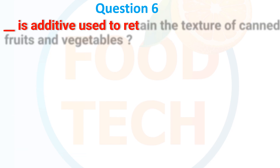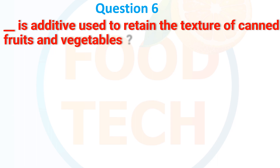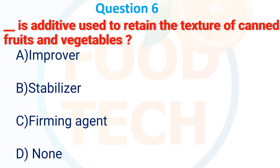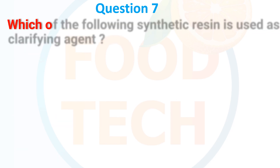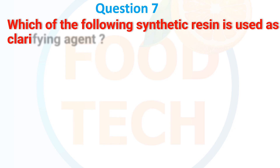A firming additive is used to maintain the texture of canned fruit and vegetables. A. Improver, B. Stabilizer, C. Firming agent, D. None. The answer is C. Firming agent.